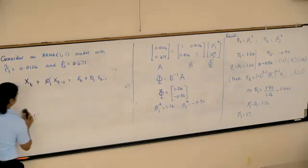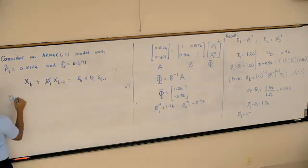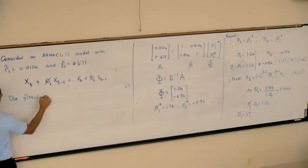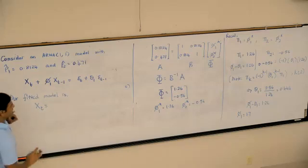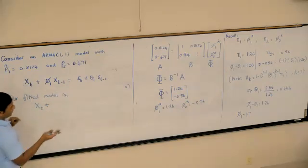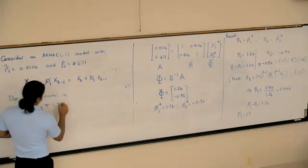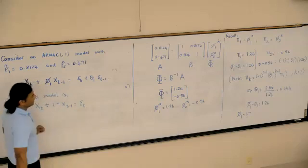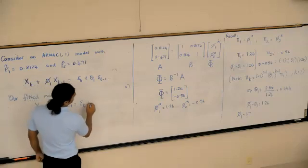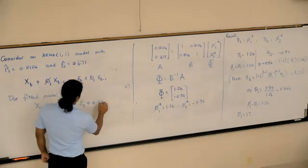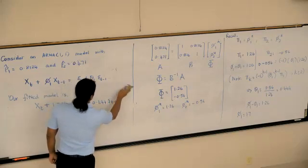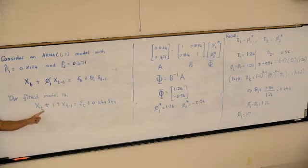Xₜ + φ₁(1.7)Xₜ₋₁ = εₜ + θ₁ which is 0.444εₜ₋₁. Is this model causal? No.